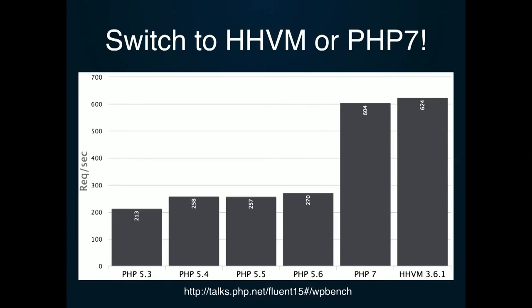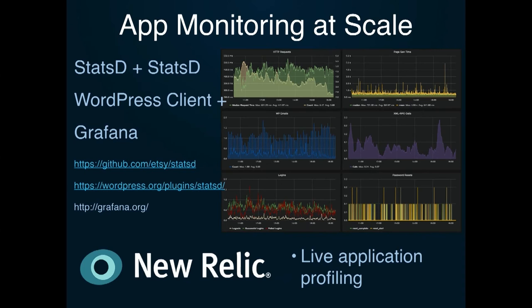Finally, think about switching to PHP 7 — so exciting. On Thursday, PHP 7 was released, and I'm very excited to be rolling it out on Edublogs, WPMU Dev, and some of the sites that we host soon. It's showing two to three times higher speed than the previous version of PHP. That's a huge thing, and it's very exciting. So look at switching your server to using the latest versions of PHP if possible.